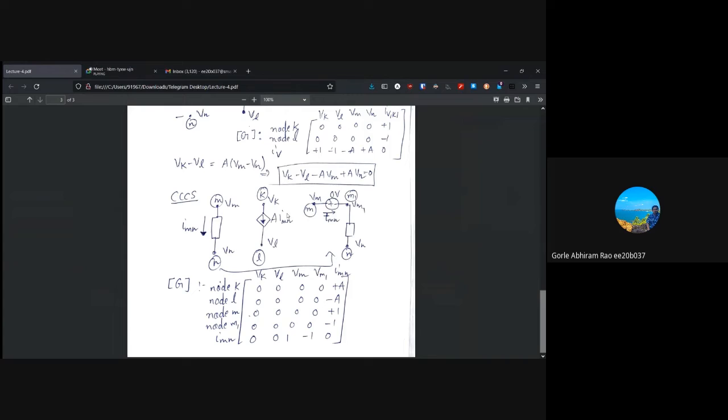So, to simplify our analysis, in this case, what we do is between m and some other point m1, we are going to connect a zero volt voltage source, so that this imn becomes a controlling variable.